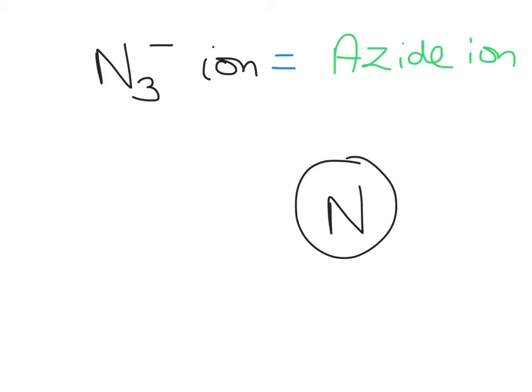So if we just start with this nitrogen here, there's 1, 2, 3, 4, 5 electrons. And if we now give it an extra electron, then this is the nitrogen that is responsible for the negative charge on the whole thing.